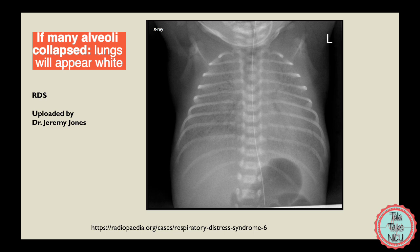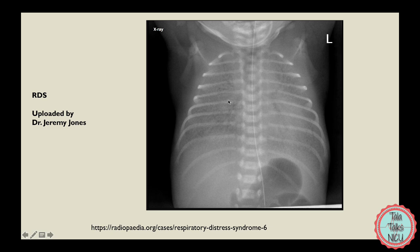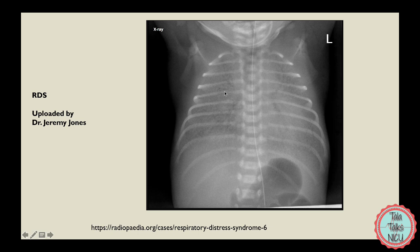As you'd expect, if enough alveoli are collapsed then the whole lungs will be collapsed or hypoinflated. On x-rays you'll often see these lungs are hypo-expanded, maybe five, six, or seven ribs. Counting here you reach about eight ribs, but there's an important point: the expansion of the lungs on the x-ray isn't just going to depend on the intrinsic lung disease — it also depends on how much support the baby is on. If the baby is on an oscillator with extremely high pressures, the lungs are probably not going to be extremely hypo-expanded.